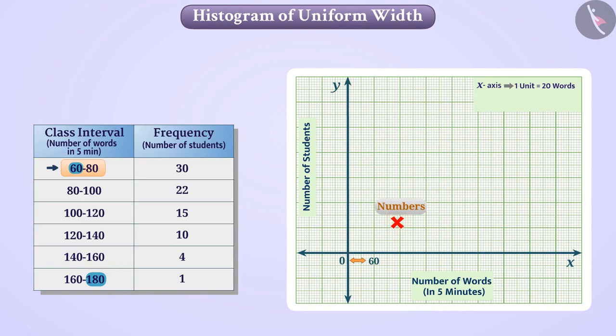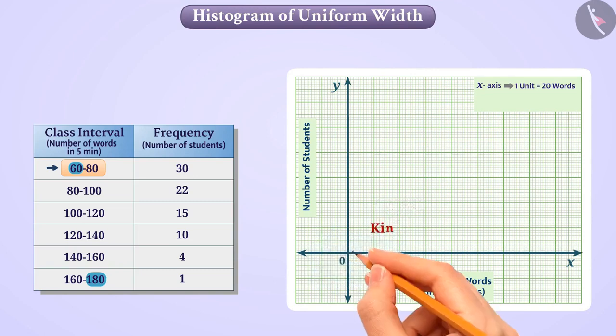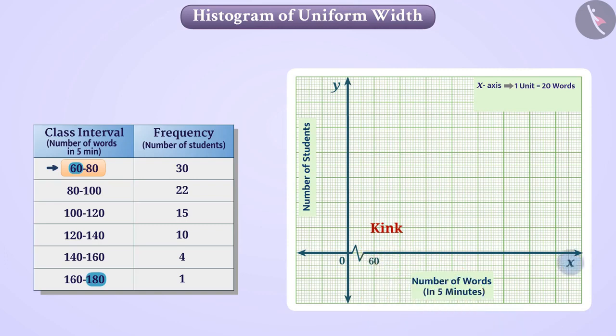To show that we are not taking the numbers from 0 to 60, we will draw a kink symbol on the x-axis. Thus, keeping in mind the scale on the x-axis, we will show numbers from 60 to 180. To show the number of students, we also have to take the appropriate scale on the y-axis.